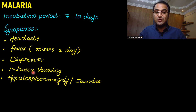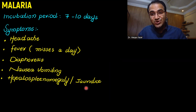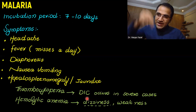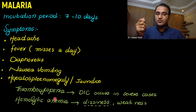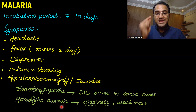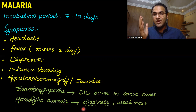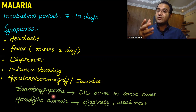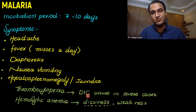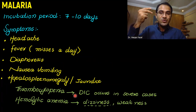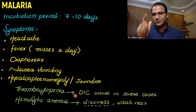With that, the patient might complain of diaphoresis, nausea, vomiting, hepatosplenomegaly, and jaundice because it damages the liver. Thrombocytopenia and DIC occur in severe cases. Platelets and hemoglobin would go down in malaria. On CBC you would see hemolytic anemia because the RBCs are getting ruptured, causing dizziness and weakness. Headache with fever that misses a day, along with thrombocytopenia and hemolytic anemia, hints toward the diagnosis of malaria.